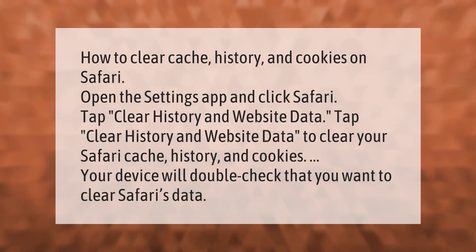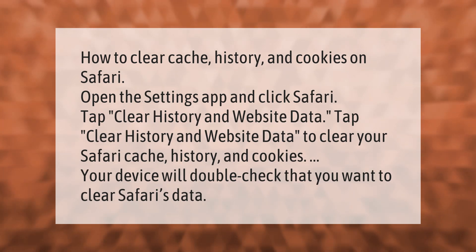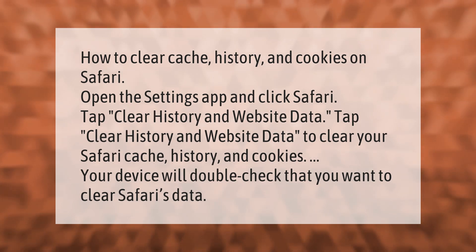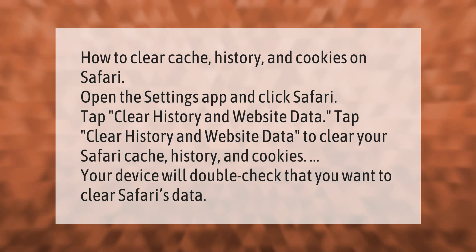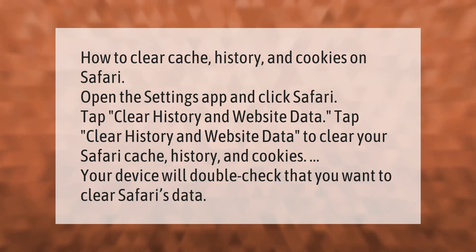How to clear cache, history, and cookies on Safari: open the Settings app and click Safari. Tap 'Clear History and Website Data,' then tap 'Clear History and Website Data' again to clear your Safari cache, history, and cookies. Your device will double-check that you want to clear Safari's data.